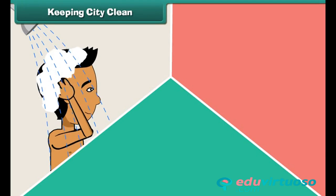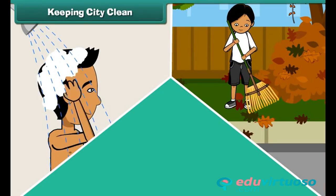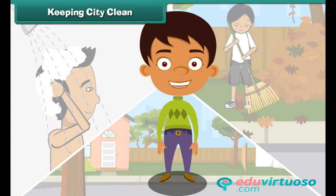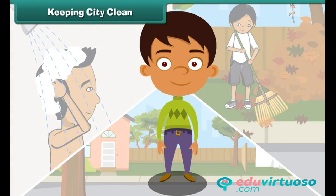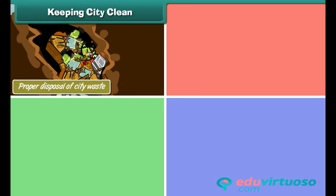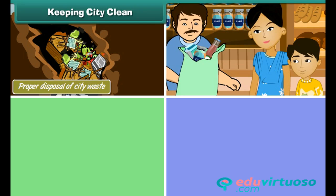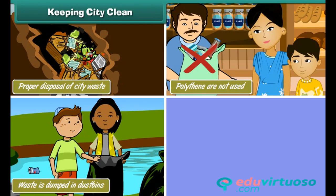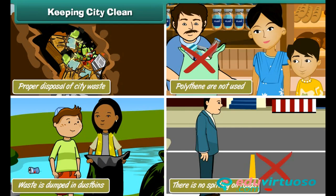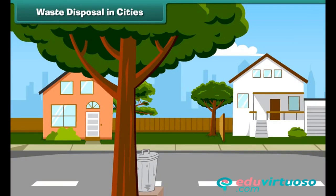Keeping the city clean: It is not enough to maintain personal, neighborhood, and community hygiene. It is also our responsibility to keep our city clean. We can do this by ensuring proper disposal of city waste, avoiding non-biodegradable substances like polythene, dumping waste in dustbins, and not spitting on roads.